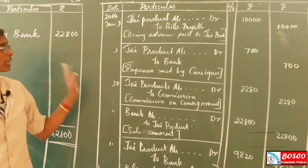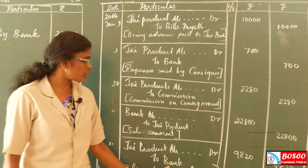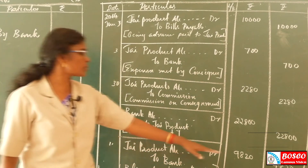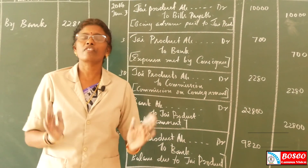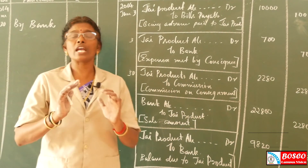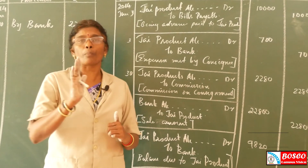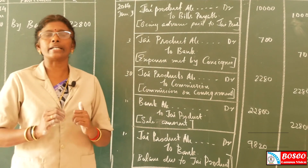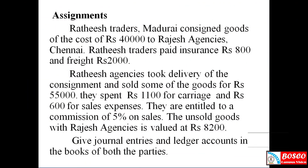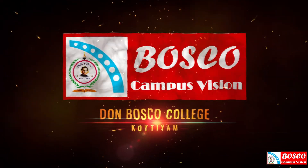The final journal entry: balance due from the consignee — J. Products Account debit to Bank — Rs. 9,820. This completes all journal entries in the books of North Traders. This problem covers the consignment account topic, which is important for a 50-mark essay question in university exams. For more information, visit www.fema.org.